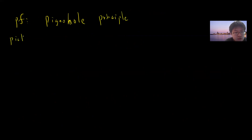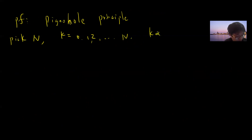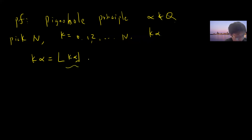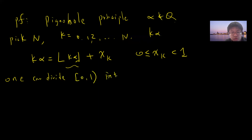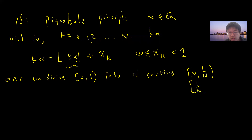The proof is very simple using the pigeonhole principle. Pick n, and consider k from 0, 1, 2, up to n. For each k, compute k·alpha. Since alpha is irrational, write k·alpha as its integer part plus a fractional part x_k, where 0 < x_k < 1. Now divide the interval [0, 1] into n sections: [0, 1/n), [1/n, 2/n), ..., [(n−1)/n, 1].